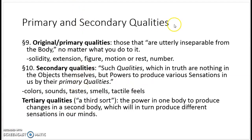He wants to distinguish also between what he calls original or primary qualities and secondary qualities. He's also got what you might call tertiary qualities, a third sort, though the tertiary ones aren't that important for our purposes. Primary qualities are those properties that are utterly inseparable from the body, no matter what you do to it. If you take a grain of wheat and crush it into small pieces, it's always going to have some kind of shape — what he calls figure — some kind of extension, some measure of solidity, and it's going to either be in motion or rest, and there will be a certain number of those particles. Those are primary qualities: solidity, extension, figure, motion or rest, number — things that basically geometry can study.